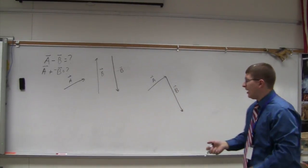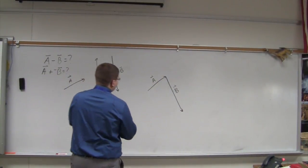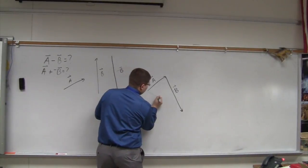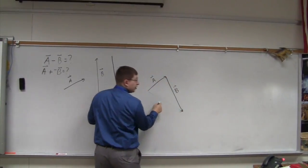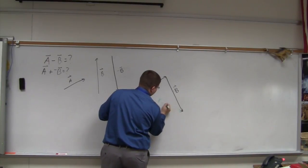And so there's my negative B vector. And then just like before, I'm going to draw the resultant. And so this green arrow right here then is just going to be A minus B.